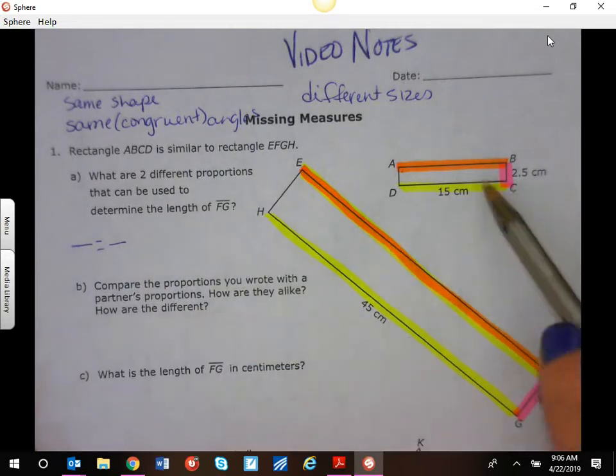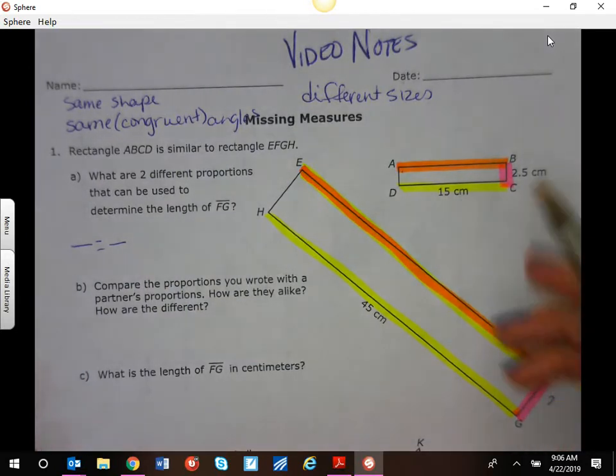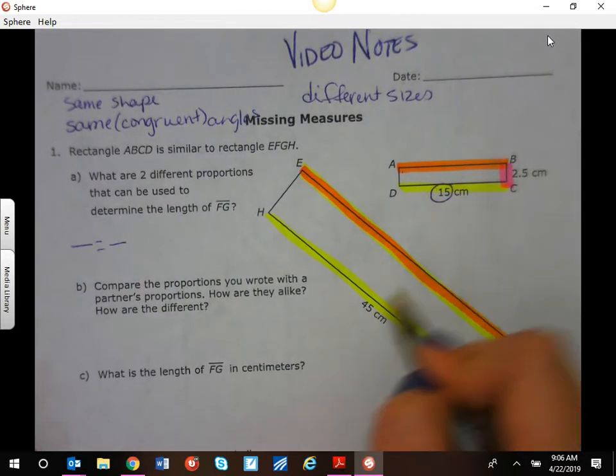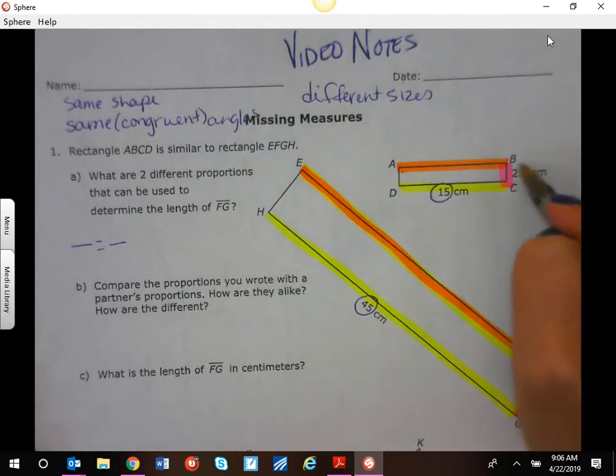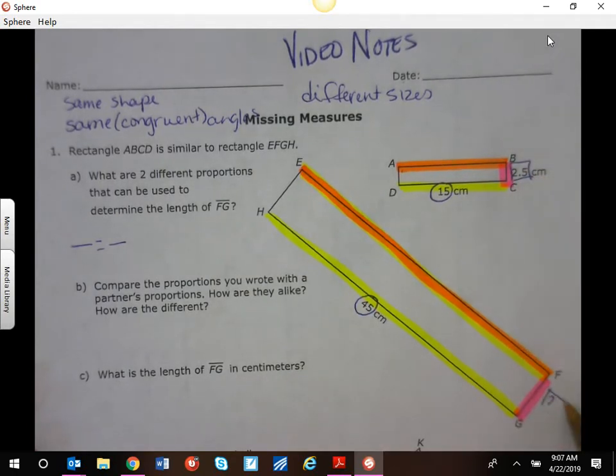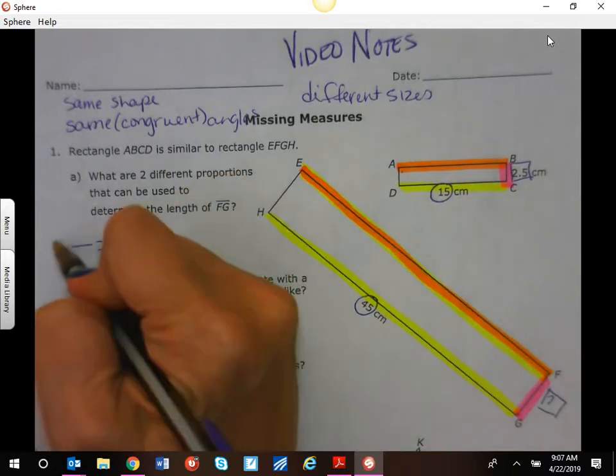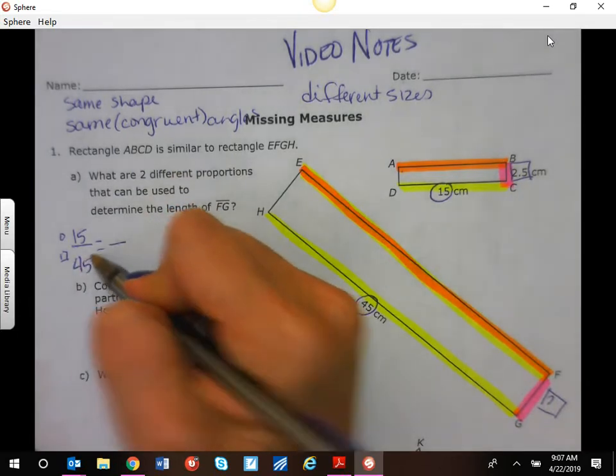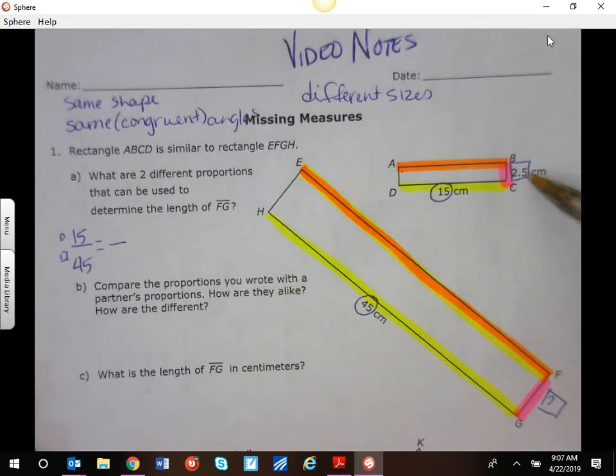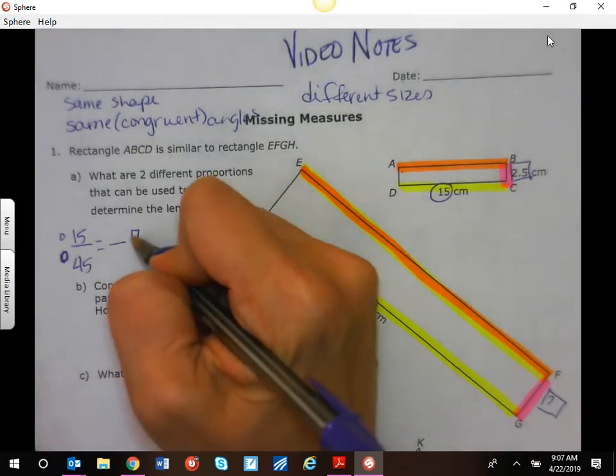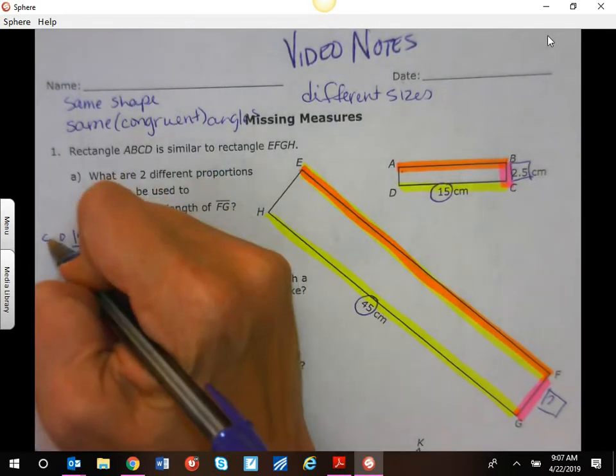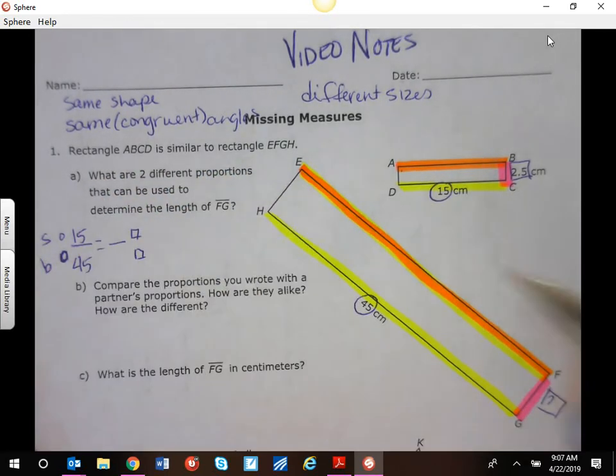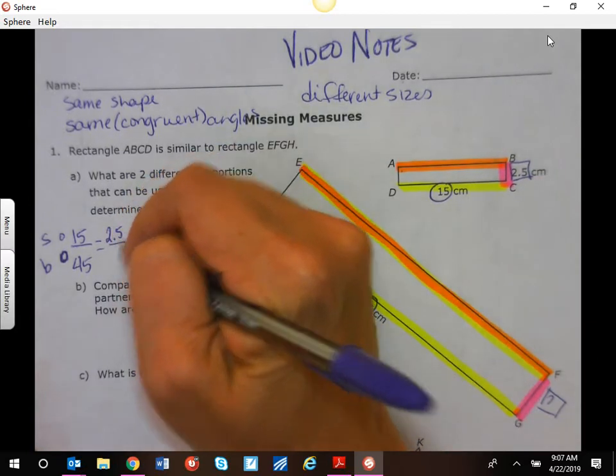We can do side to side. We talked about circles on the corresponding side squares. So I can do circle over square where I have 15 over 45 is equal to circles here and squares here where you have this small shape on top and the big shape on the bottom so then we have 2.5 over something.